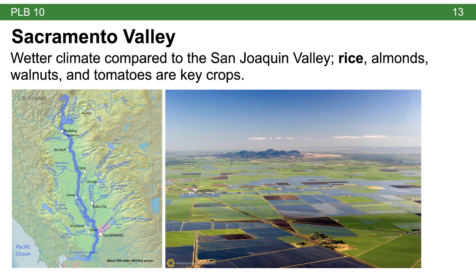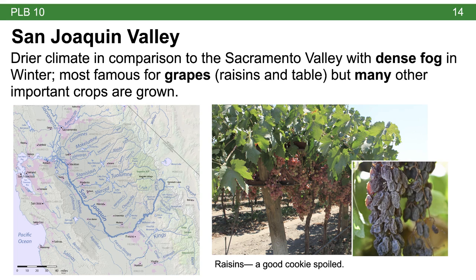The Central Valley can essentially be divided into two parts. The northern part is referred to as the Sacramento Valley, defined by the Sacramento River, and has a wetter climate. Here we tend to grow things like rice, almonds, walnuts, and tomatoes especially. The southern part is referred to as the San Joaquin Valley, defined by the San Joaquin River. This has a much drier climate with dense fog in winter, and is most famous for grapes — both table grapes and raisins — as well as many other important crops.